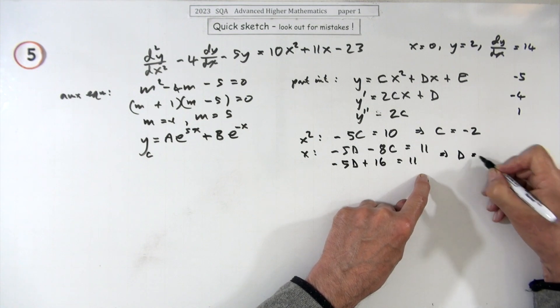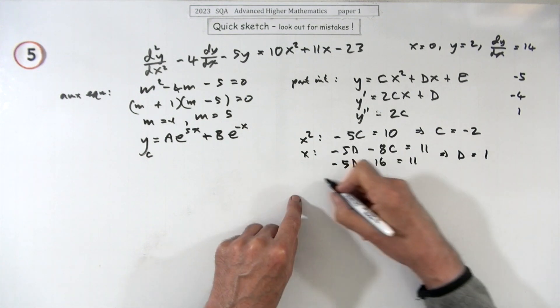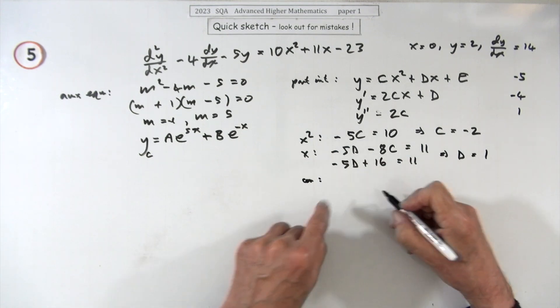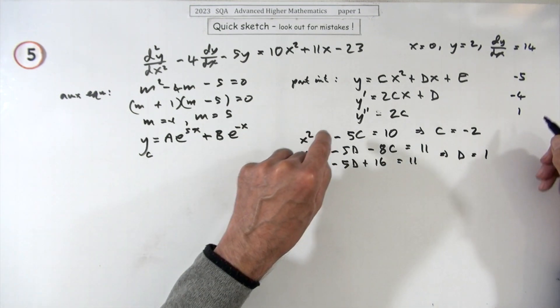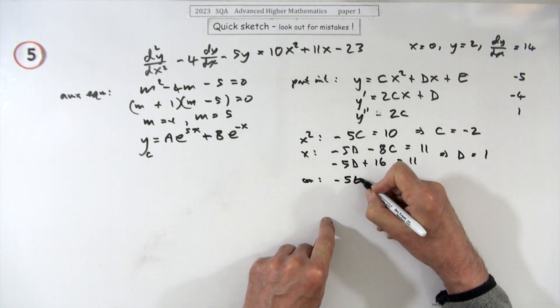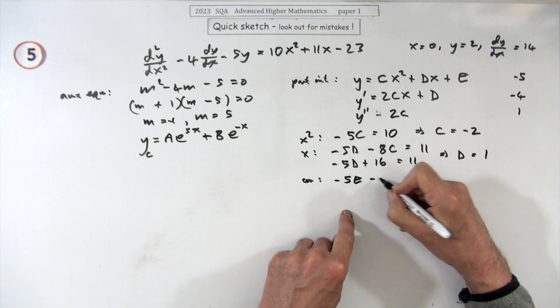And then for the constant, I didn't want the space to use, right, constant, that's the big one really because for the constant I'm going to have negative five of e minus four of d.